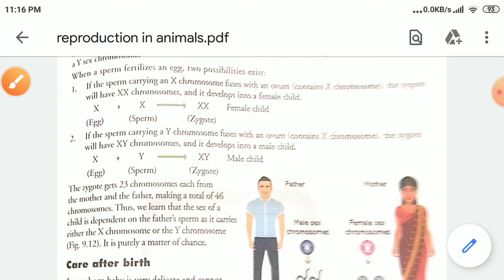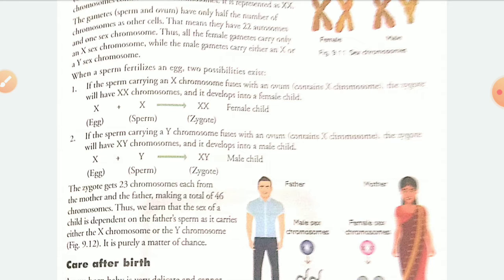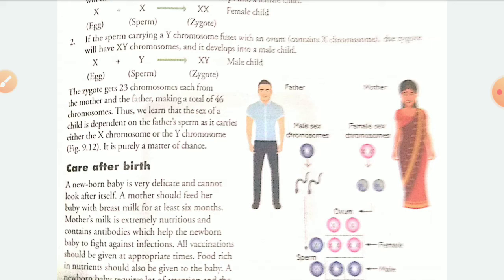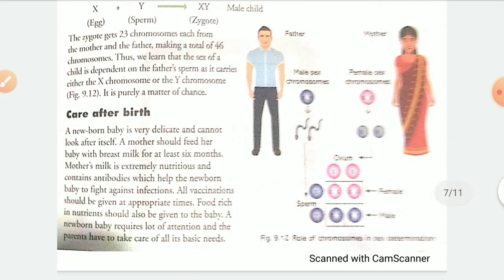The gamete — egg or sperm — contains only one set of chromosomes, meaning there are 23 single chromosomes in a gamete. An egg always carries only one X chromosome, while a sperm may carry either an X or Y chromosome. Sperms are thus of two kinds. When an egg and a sperm fuse during fertilization, it is this 23rd chromosome that determines the sex of the baby. If the sperm carries X, the baby will be a girl; if it carries Y, the baby will be a boy. There is a 50-50 chance of generating a boy or a girl.